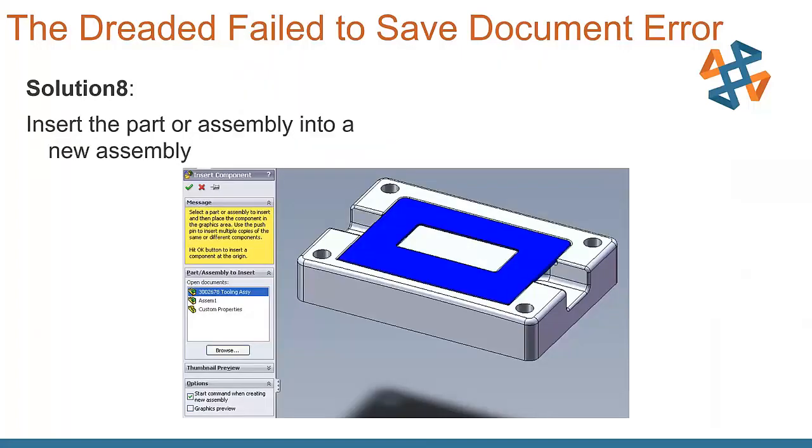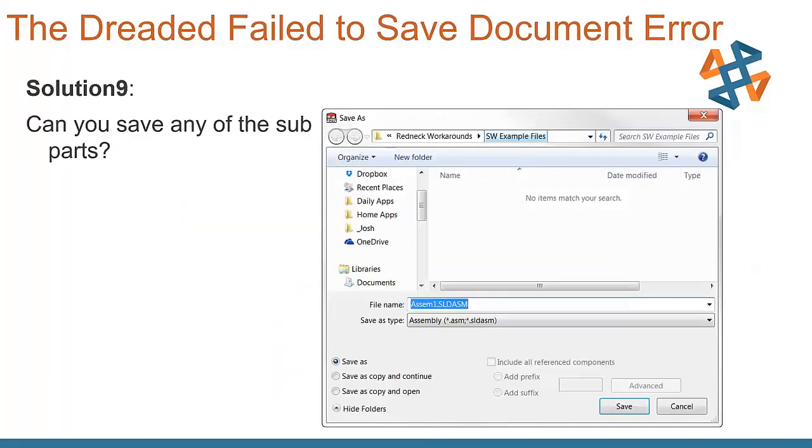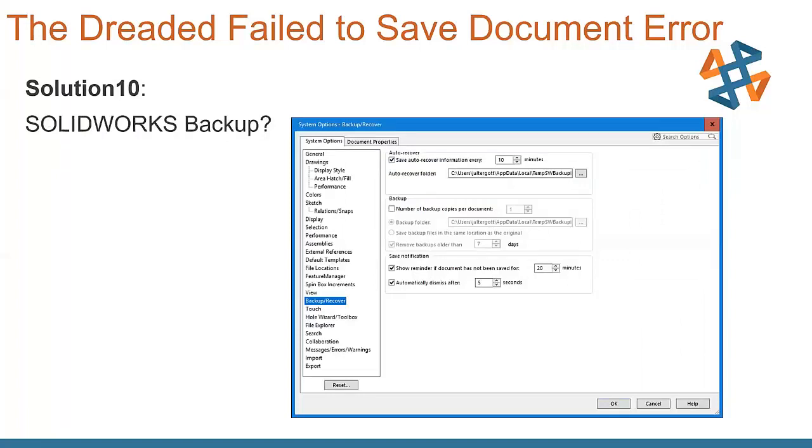We can always insert the part or assembly into a new assembly. If it was in a single part file, drop it into an assembly, see if it will save out that way. Can you save any of the subparts? Open up the individual part files or individual subassemblies and try and save those out, see what happens with those individual files.